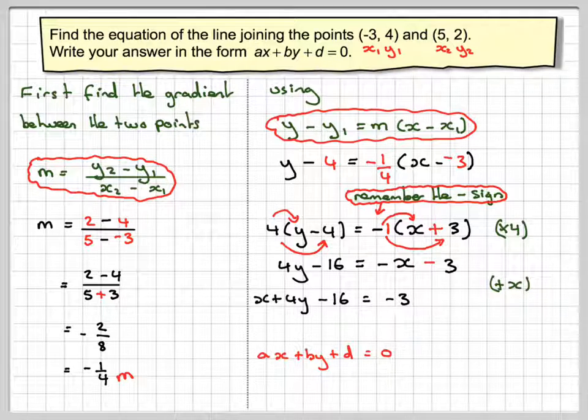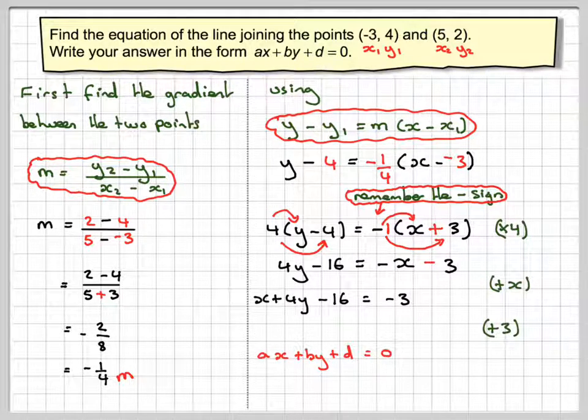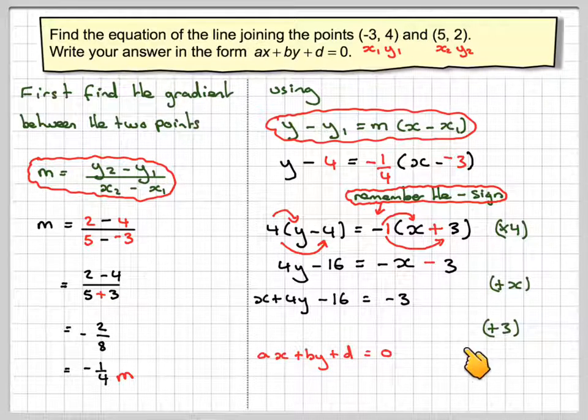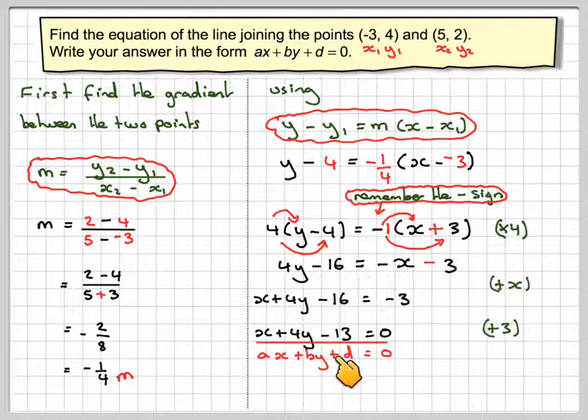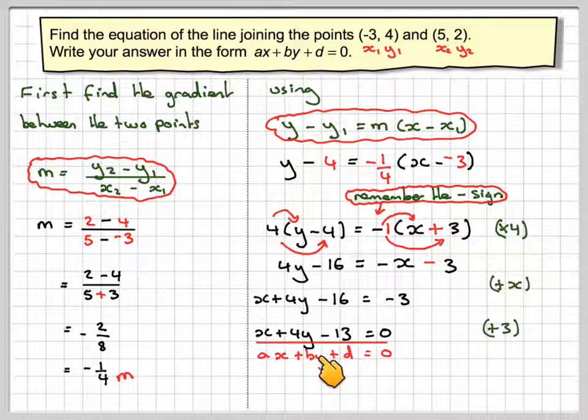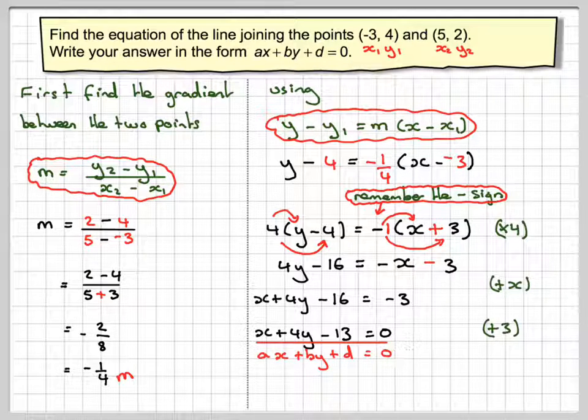Careful with the signs. To make this 0, we're going to have to add 3. So adding 3 to both sides, we're going to have x + 4y - 16 + 3, which is -13, and on this side we have 0. So this is now in the correct format: x + 4y - 13 = 0.